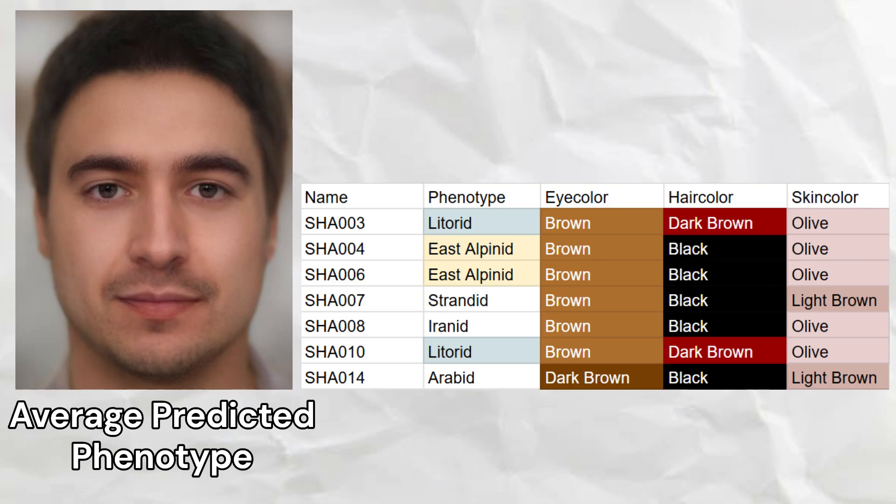The most common predicted phenotypes were Litterate and East Alpinate, although Iranate, Strandate, and Arabid phenotypes were also predicted. Here is a morph of the average predicted phenotype, with all of these taken into account.